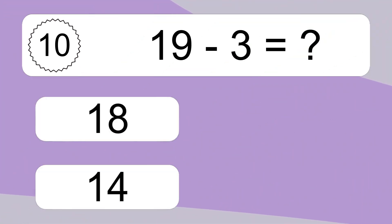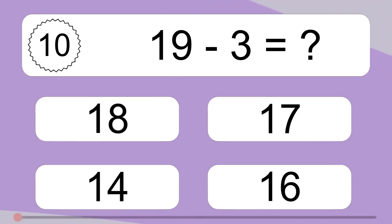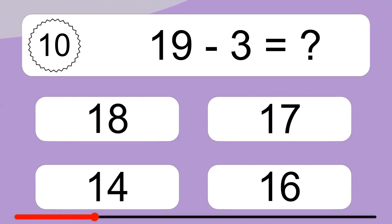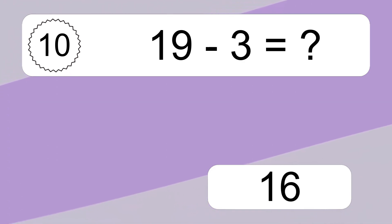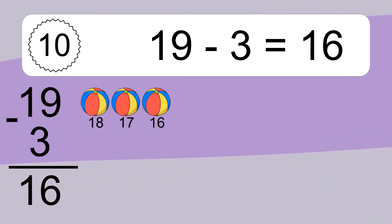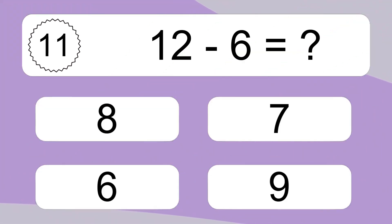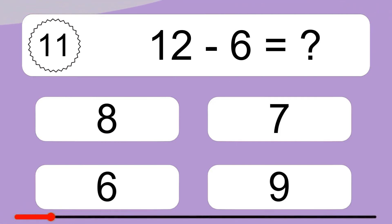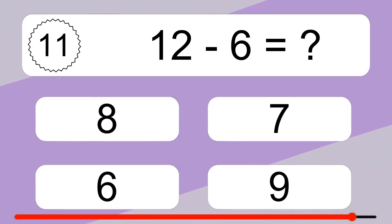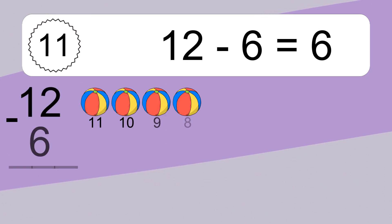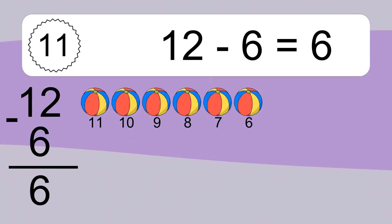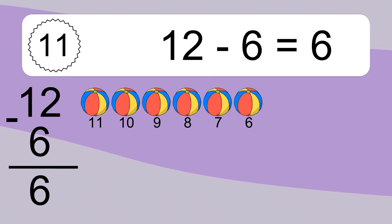19 minus 3 equals what? 19 minus 3 equals 16. Let's count it. 18, 17, 16. 12 minus 6 equals what? 12 minus 6 equals 6. Let's count it. 11, 10, 9, 8, 7, 6.